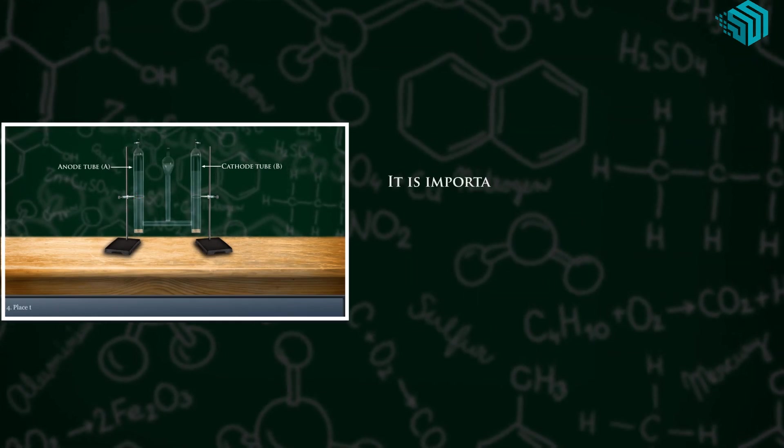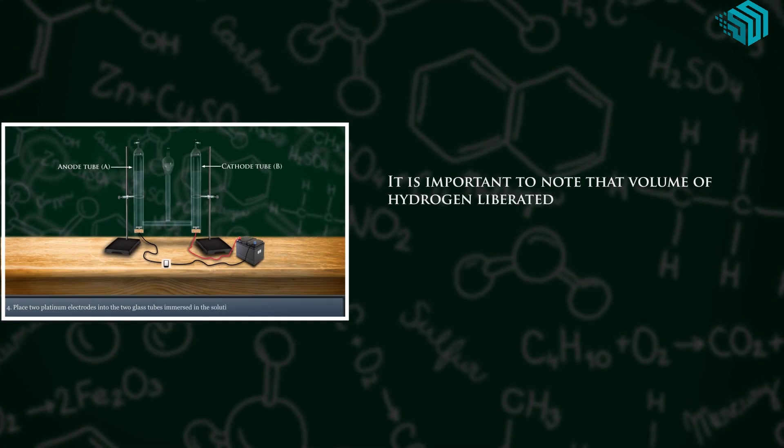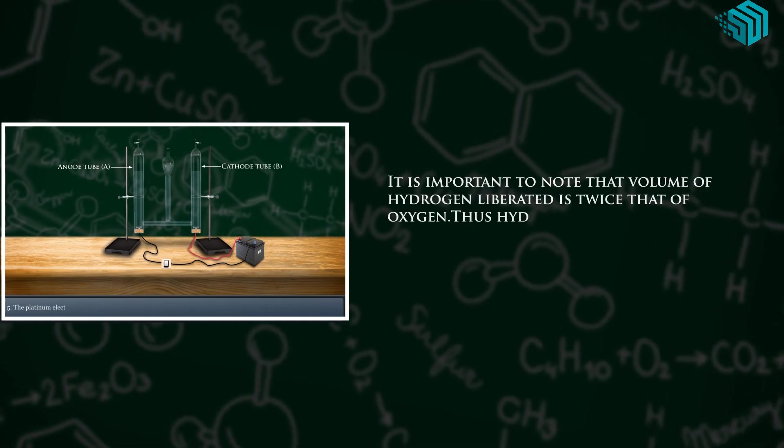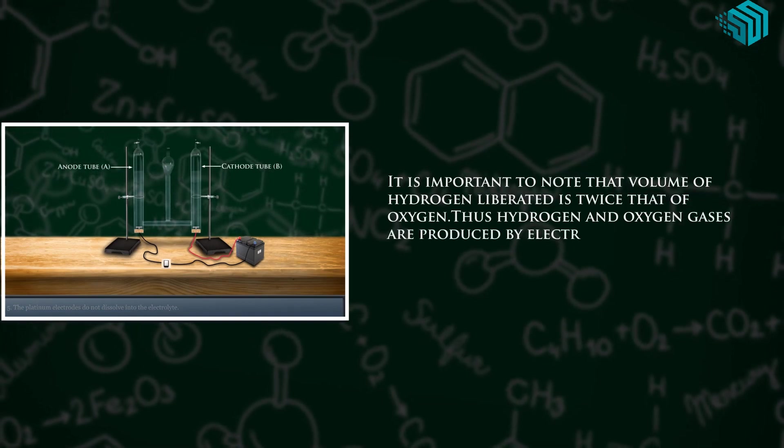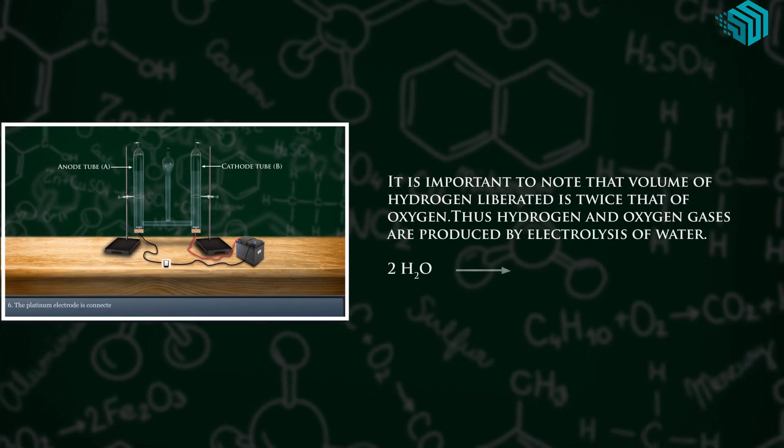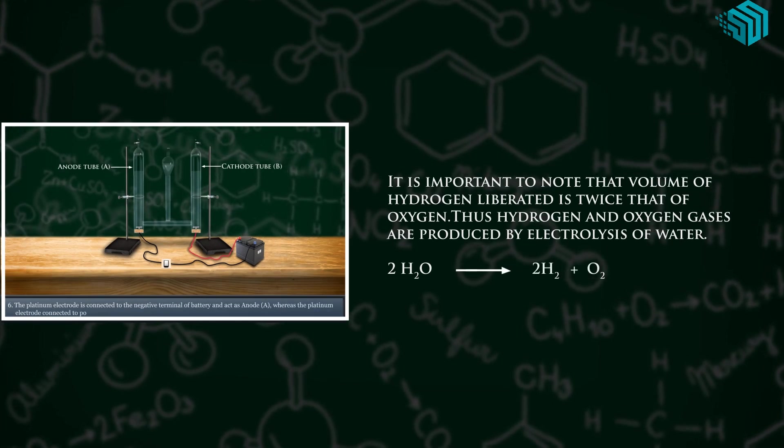It is important to note that volume of hydrogen liberated is twice that of oxygen. Thus, hydrogen and oxygen gases are products by electrolysis of water. 2H2O gives us 2H2 plus O2.